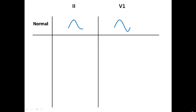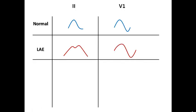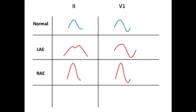To summarize: a normal P wave in lead 2 is less than 2.5 mm in amplitude and less than 120 ms in duration; in V1, the negative component is less than 1 mm in depth and width. In left atrial enlargement, duration is increased in lead 2 with two humps separated by more than 1 mm, and in V1 the negative component is more than 1 mm wide and 1 mm deep. In right atrial enlargement, amplitude is increased without affecting duration — more than 2.5 mm in lead 2 and more than 1.5 mm in V1. In biatrial enlargement, both duration and amplitude are increased.